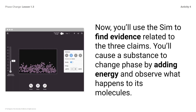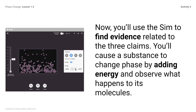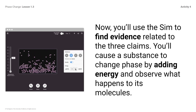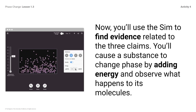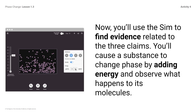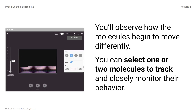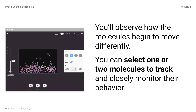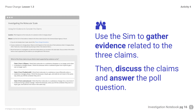Now you will use the SIM to find evidence related to these three claims. You will cause a substance to change phase by adding energy and observing what happens to its molecules. You will observe how the molecules begin to move differently. You can select one or two molecules to track and closely monitor their behavior. Use the SIM to gather evidence related to the three claims, then discuss the claims and answer the poll questions.